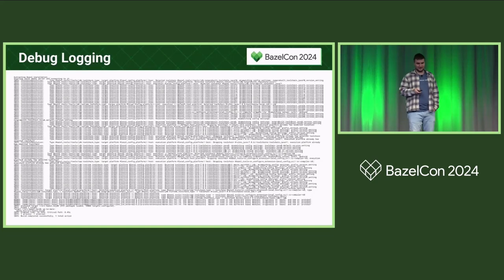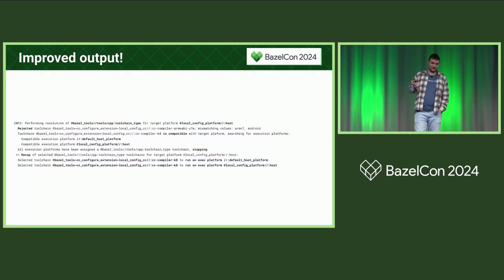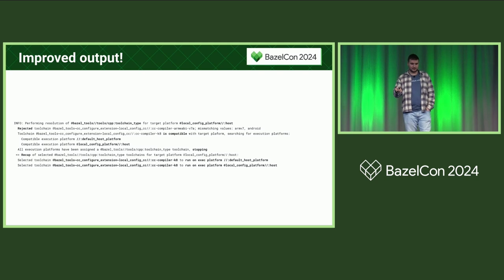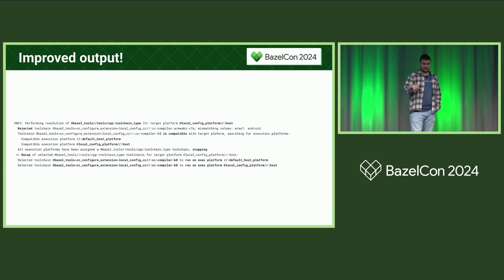Guillaume submitted a fix for Bazel 7 that made this a lot better. This is what the same output looks like with Bazel 7. Here you see the first part of toolchain resolution: you have a certain toolchain type, a target platform, and then you go over all of the toolchains. You check if the toolchain can target the platform, then check all execution platforms to see if it can execute on them, and then you get a recap. Most importantly, for one invocation of the algorithm, you get just one message, with indentation to give context of where in the loop you are.